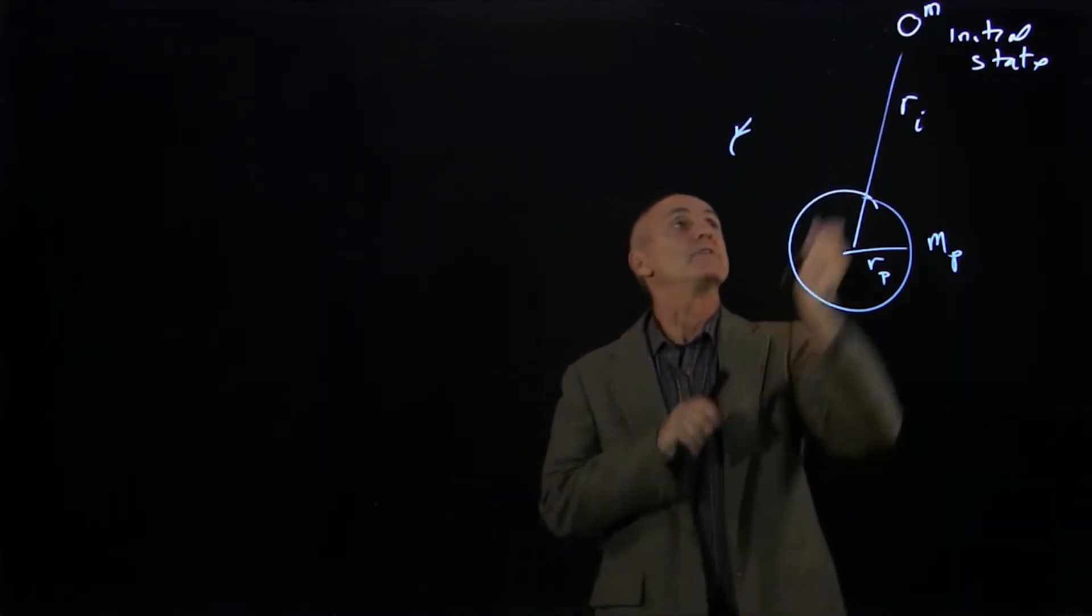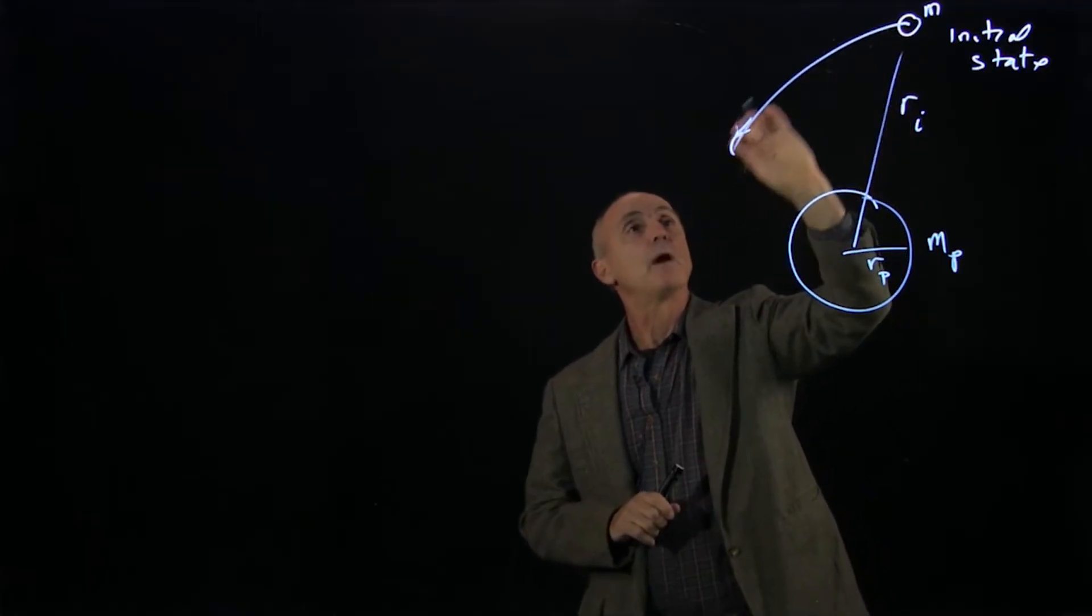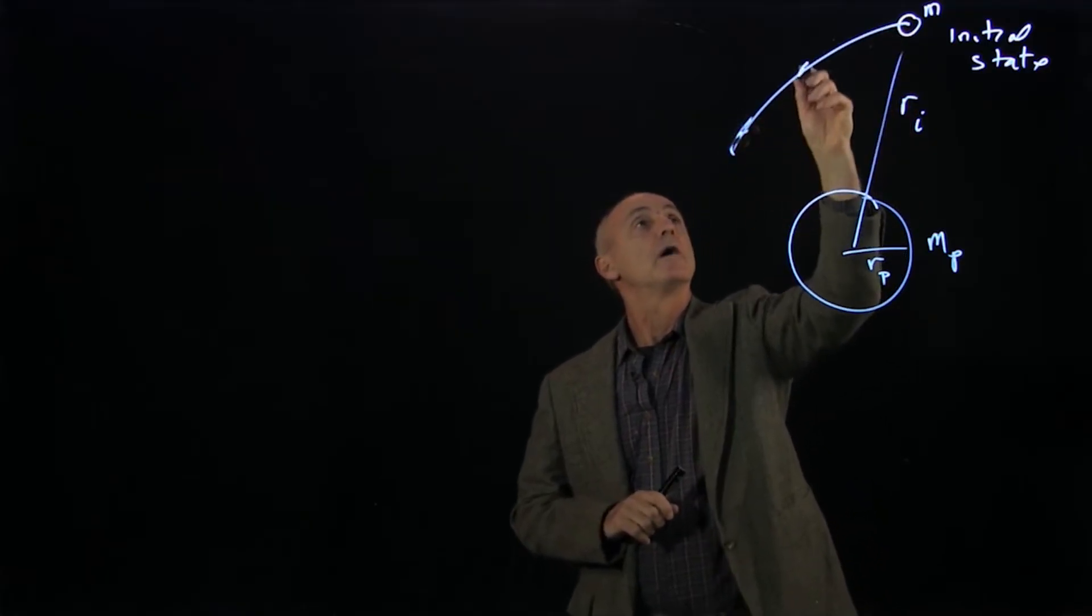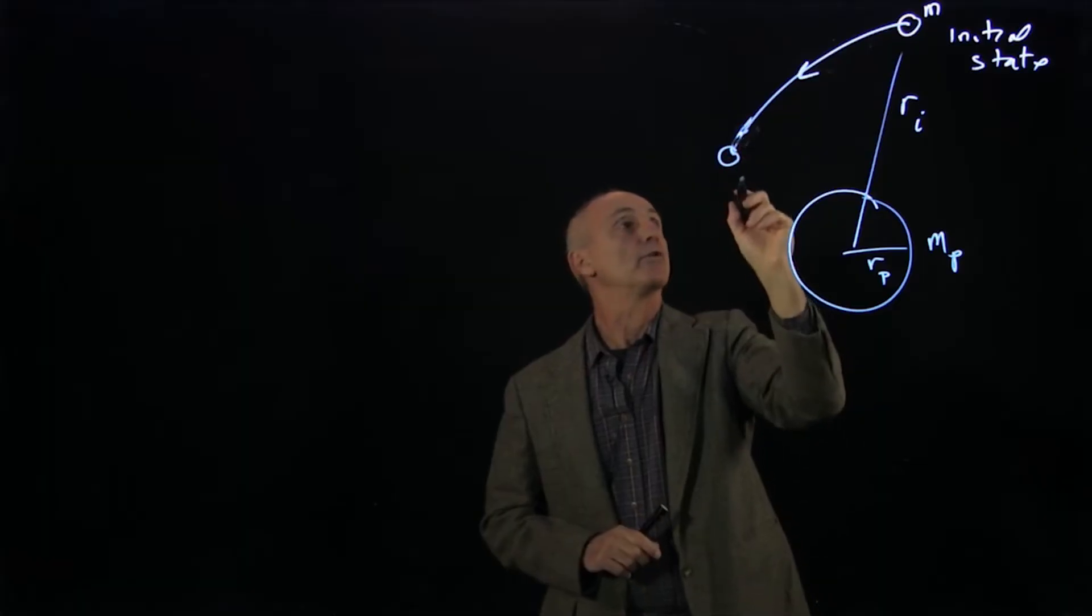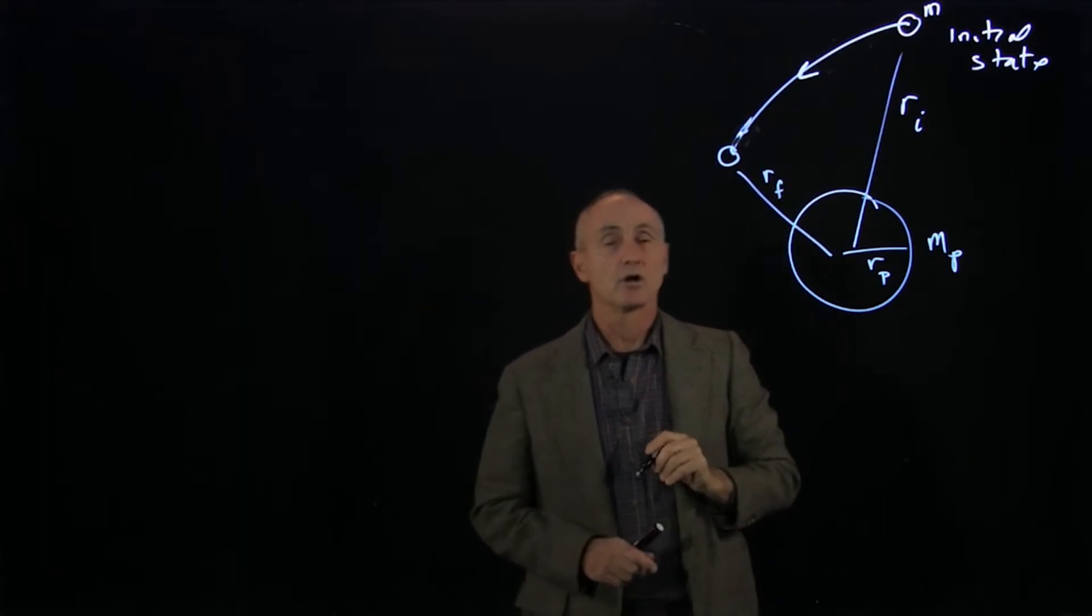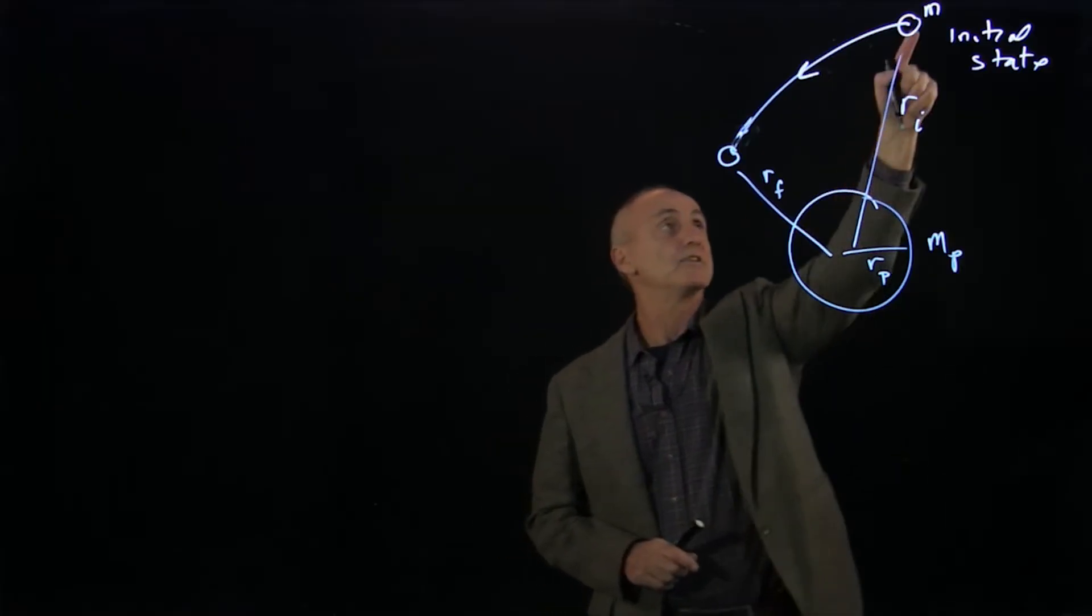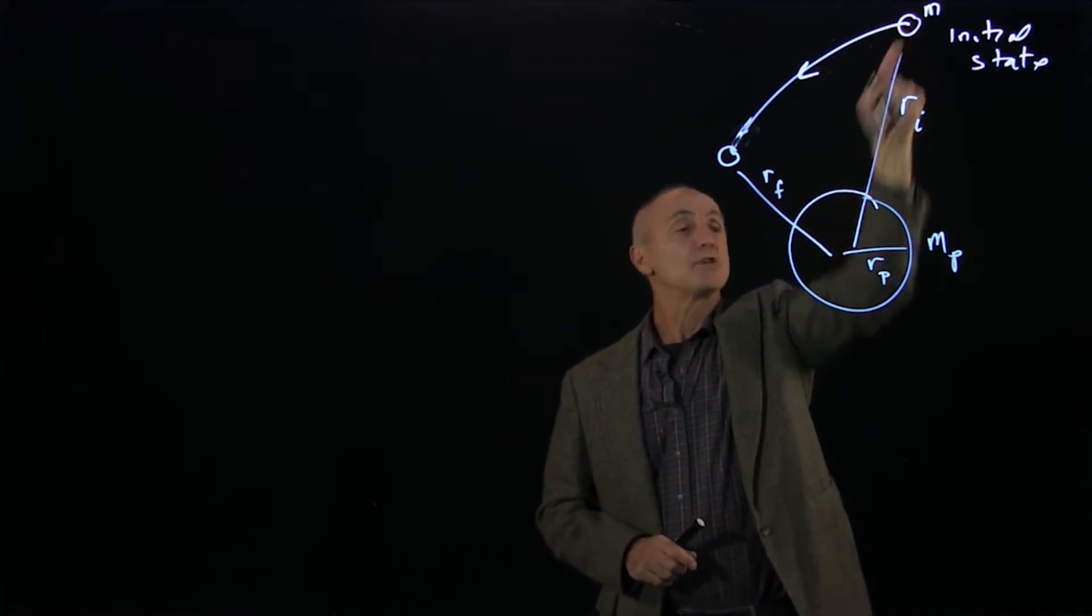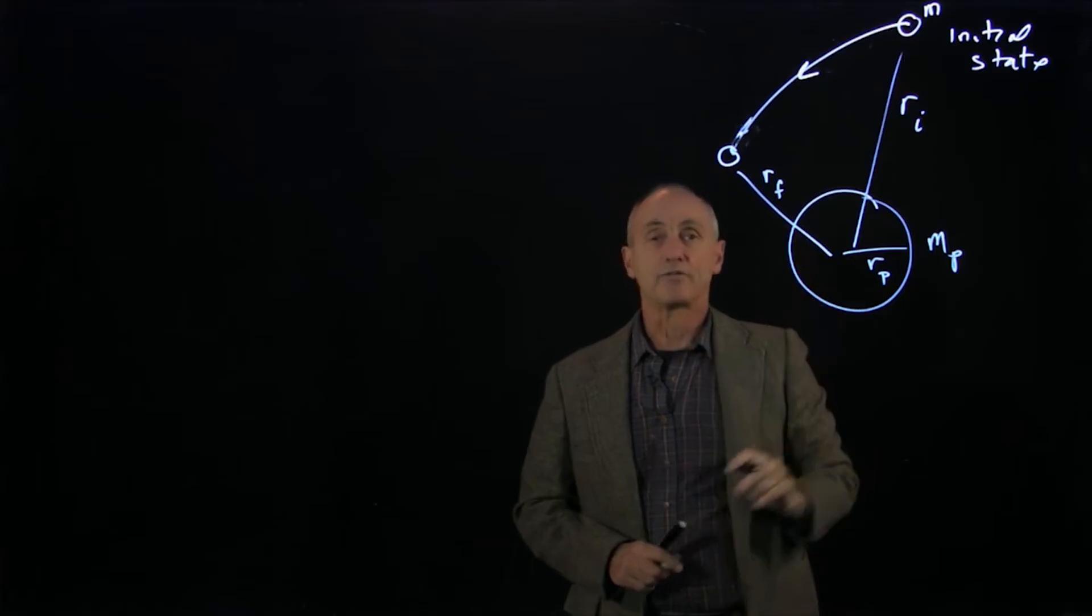Our orbit might be some type of hyperbolic conic section, and the orbit over here is at some final position. ri is the distance from the object to the center of the planet, as rf is.